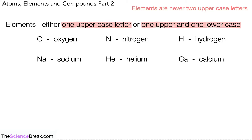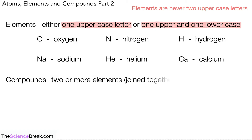Remember: we never have two uppercase letters. Elements are never shown as two uppercase letters — it's either one uppercase, or one uppercase and one lowercase. Now, in terms of compounds — compounds are two or more elements joined together by strong bonds. How do we write them using symbols?